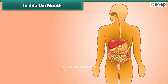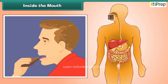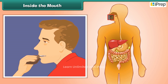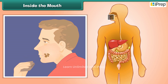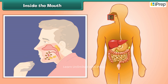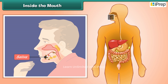Inside the mouth: Digestion of food starts in the mouth. The teeth cut the food into small pieces. There it mixes with digestive fluid produced by the mouth called saliva. This makes the food moist and soft.